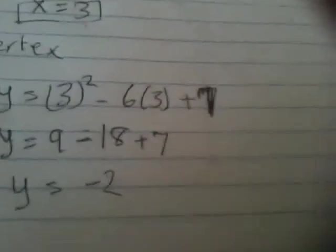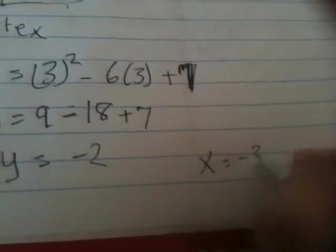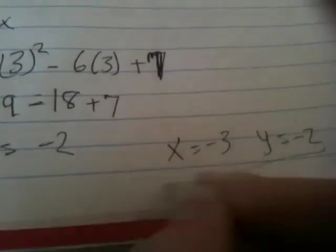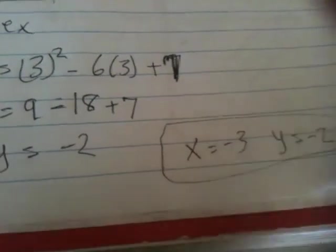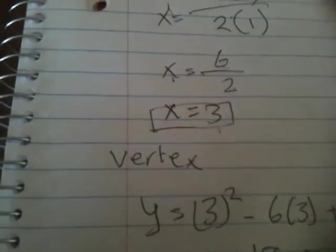So our vertex is (3, -2). This is our vertex and axis of symmetry. I hope this helps you guys, thanks.